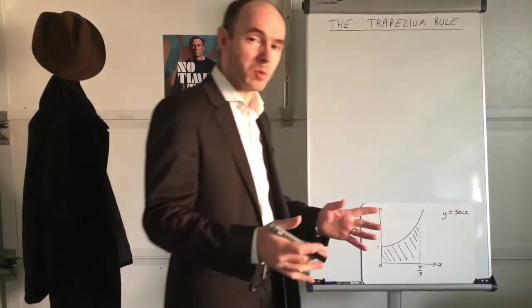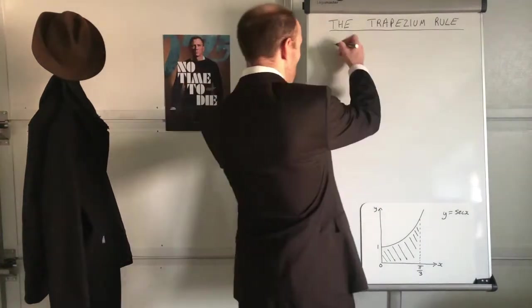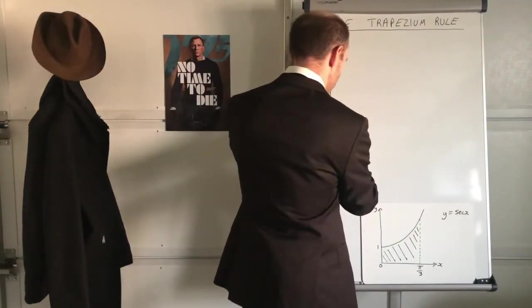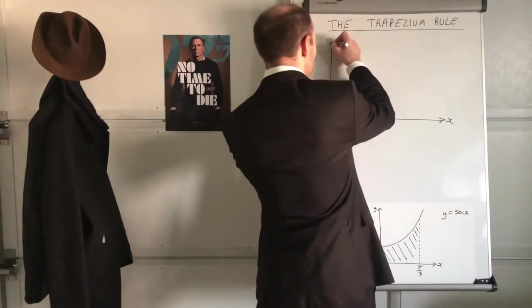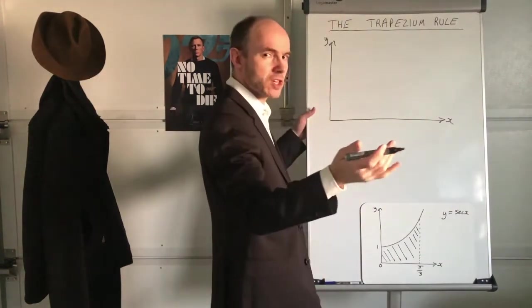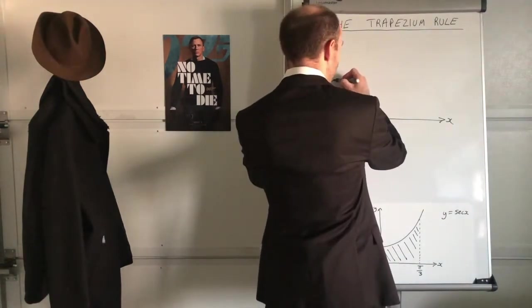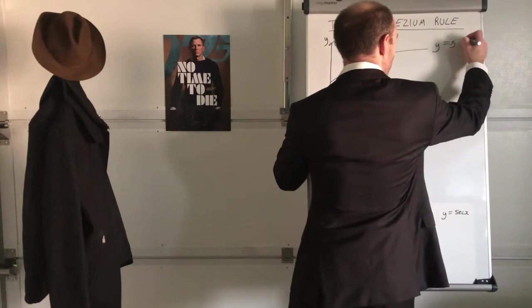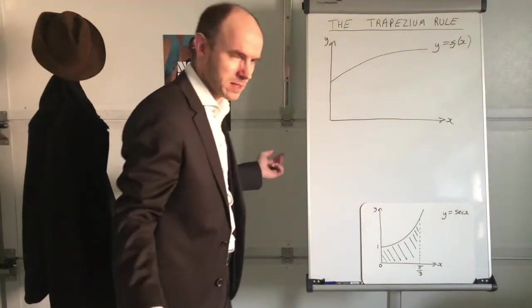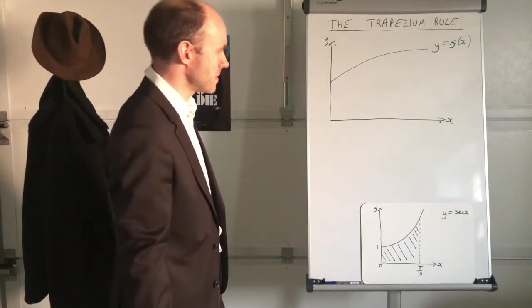Let's see what the trapezium rule is all about. What I'm going to do is just draw out a set of axes, nice and large. And I'm going to draw a generic curve, what I mean by a generic curve, I mean just this, really, for presentation purposes.